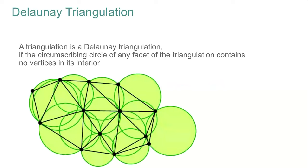What is a Delaunay triangulation? In the 2D case, given a triangulation of a set of input points in the plane, this triangulation is said to be Delaunay if the circumscribing circle of each triangle does not contain any point in its interior. Delaunay triangulations are particularly interesting because they are guaranteed to maximize the minimum angle over all possible triangulations. In the context of mesh generation, having a minimal angle that is not too small is often a prerequisite.